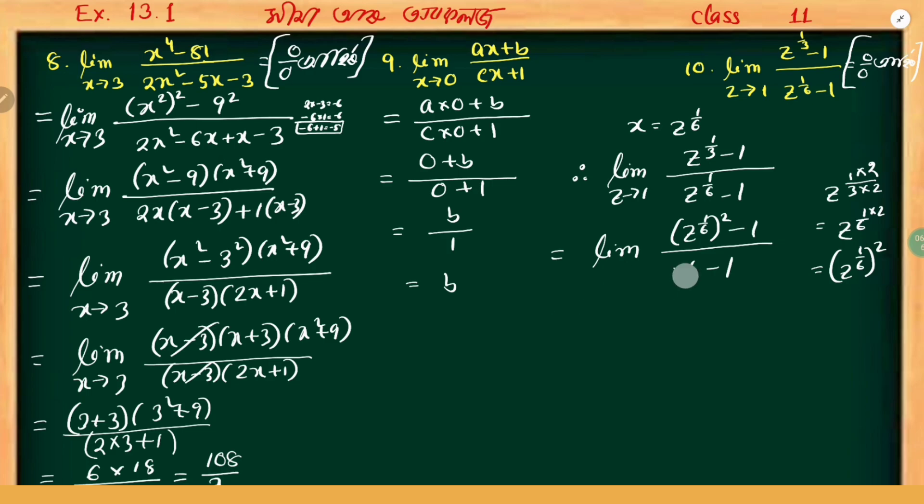Here z to the power 1 by 6 equals x, so z tends to 1 means x tends to 1. Now limit as x tends to 1, x squared minus 1 divided by x minus 1.